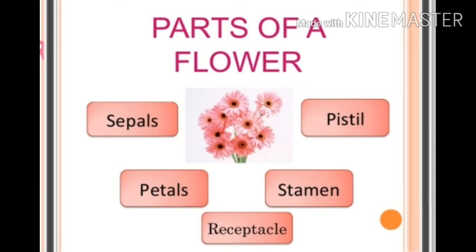A typical flower has the following parts: sepals, petals, pistil, stamen, and receptacle.